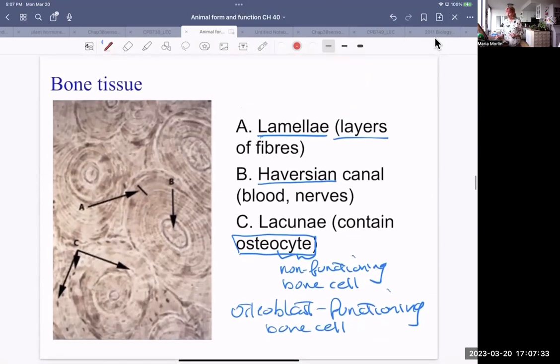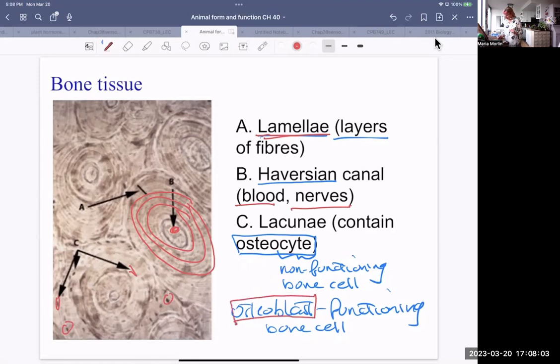Bone, another connective tissue. It has lamellae. So those are layers of fibers. That's bone material. And Haversian canal, that's in the center here. That transports blood and nerves. Lacunae, they're all over the place. Each of these lacunae contains an osteoblast if it's a functioning cell. So when a cell is functioning like a fibroblast or an osteoblast, it means it's producing the matrix like bone. But if it's not producing anything, it's called an osteocyte that's non-functional. Sometimes they're just dormant for a long time until they're needed again.